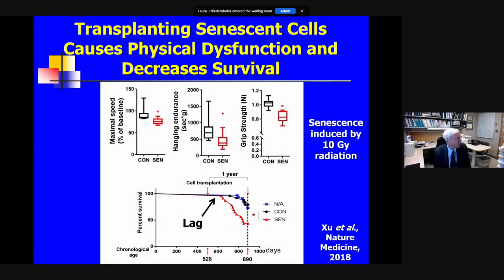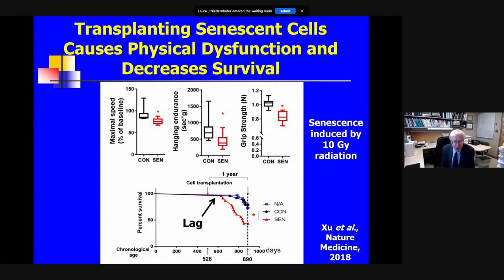If we transplant very small numbers of senescent cells into younger mice — such that only one in 10,000 cells in the transplanted mouse is a transplanted senescent cell — that is sufficient to drive frailty and, after a lag period, cause earlier death than in mice transplanted with non-senescent cells. One million transplanted senescent cells results in decreased gait speed on a treadmill, decreased hanging endurance, decreased grip strength, and earlier death. However, if we transplant 500,000 senescent cells, nothing happens — so there appears to be a threshold above which senescent cell burden can cause problems.